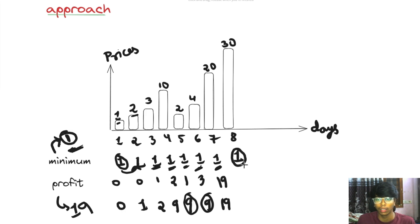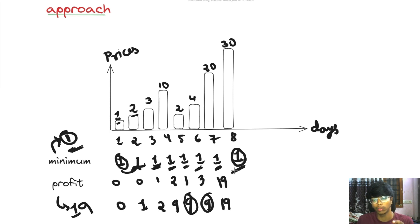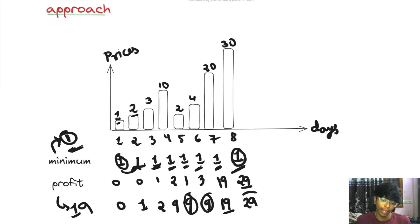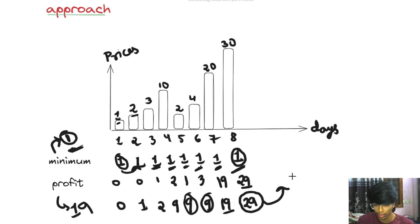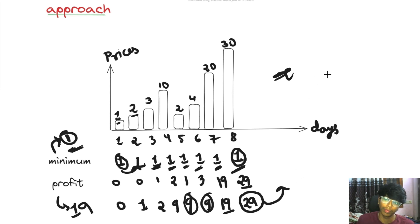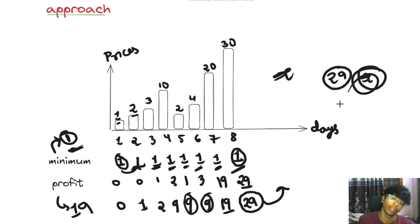Finally, minimum value is 1 and the current value is 30. 30 minus 1 equals 29. 29 is greater than 19, so profit is updated to 29. We have now got the maximum profit. Maximum profit is 29, which can be achieved by buying on day 1 and selling on day 8.